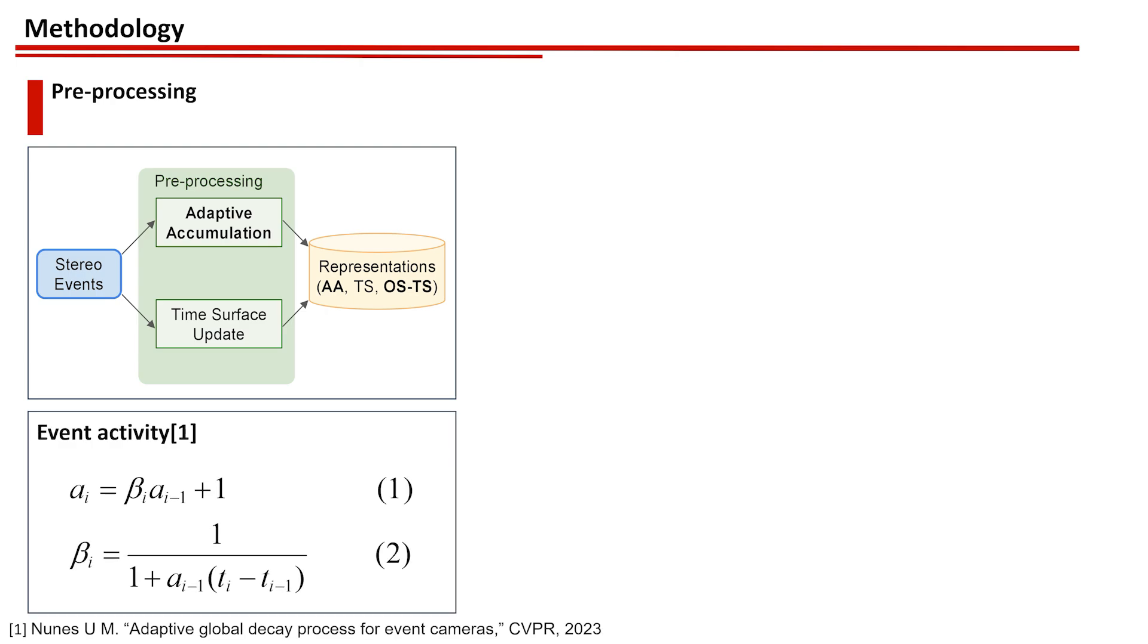We first define A as the event activity, which represents the number of events within a given time interval. Both the event activity and the decay rate, denoted by beta, can be updated according to equations 1 and 2 with each incoming event.